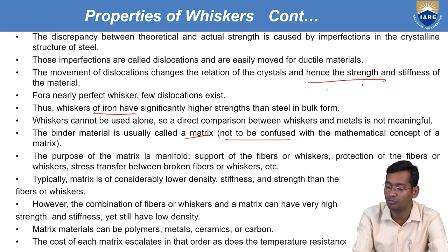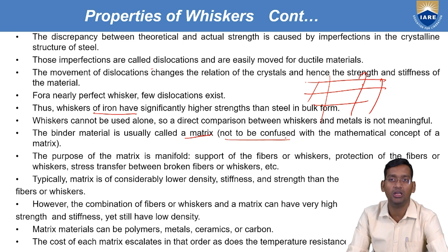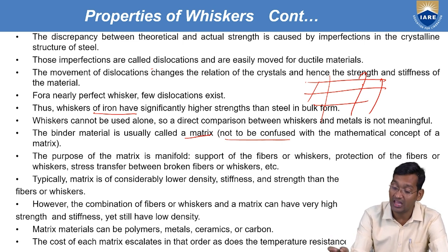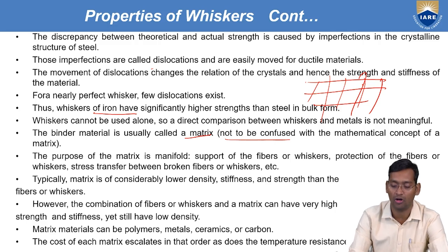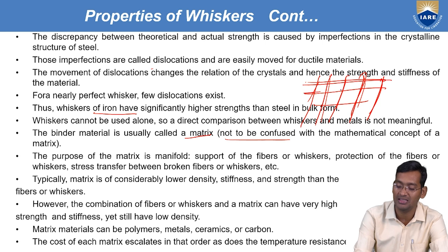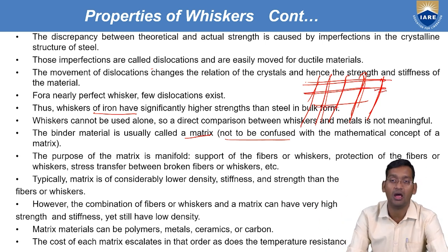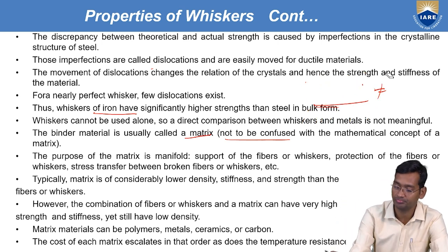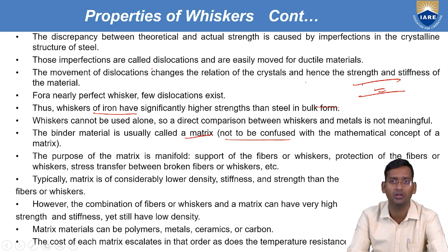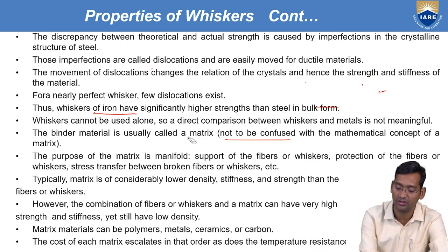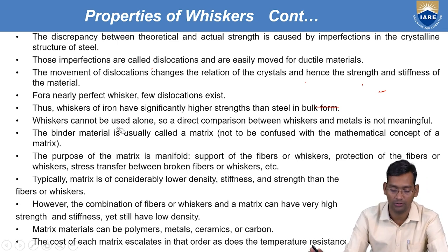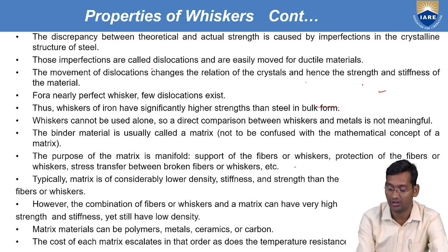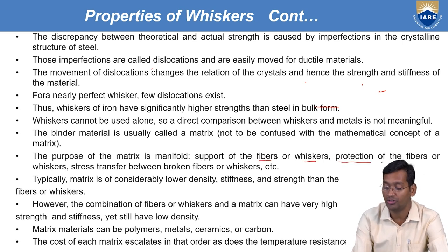For example, for a roof: first we put iron mesh (the reinforcement or fiber), and over that we put a mixture of sand, cement, stones — that combination is the matrix. Only when fiber or whisker is combined with matrix does it achieve high strength. So directly, fiber or whisker we cannot use — whenever we use them, we use them with the matrix. The purpose of the matrix is manifold: first, to support or protect the fiber/whisker; second, stress transfer between broken fiber or whisker, so if one fiber breaks, that stress will transfer to the other through the matrix.